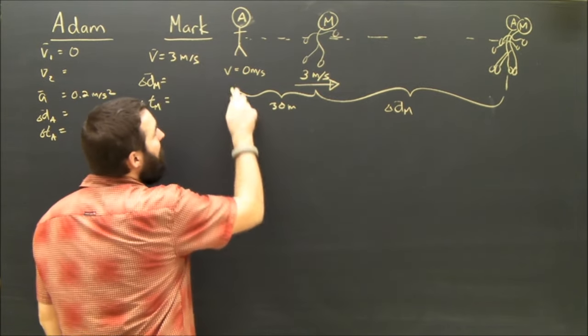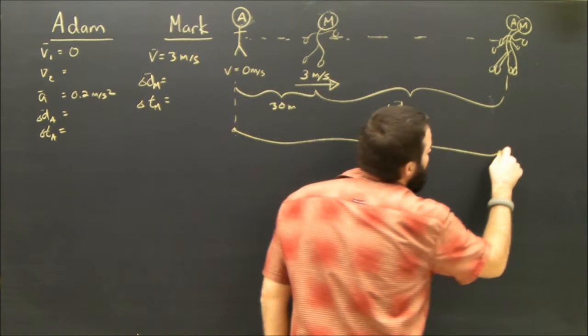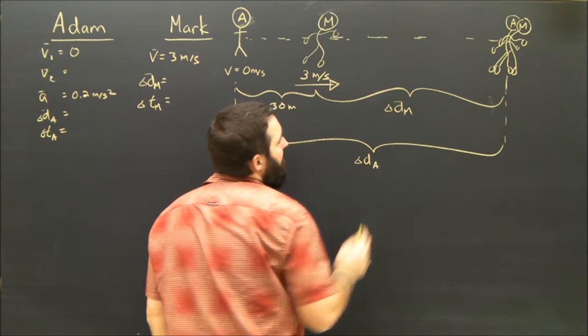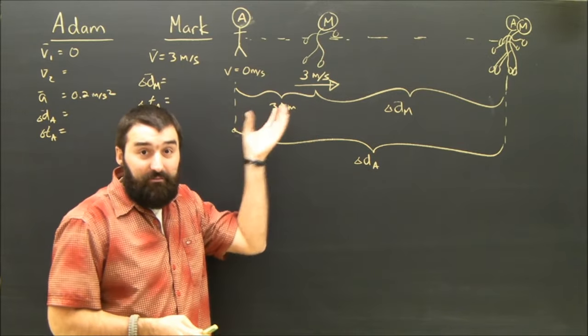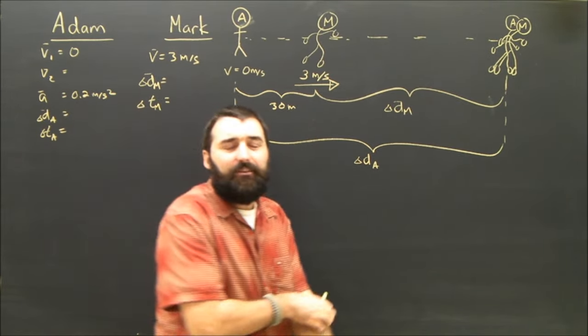What about Adam? Well, Adam started way over here. And he ran the 30 meters, and he ran as far as Mark had to run, so we're going to call that dA. Now you can see the 30 meters, of course, is part of the question, but it's not one of the givens. The question's a little harder than that.